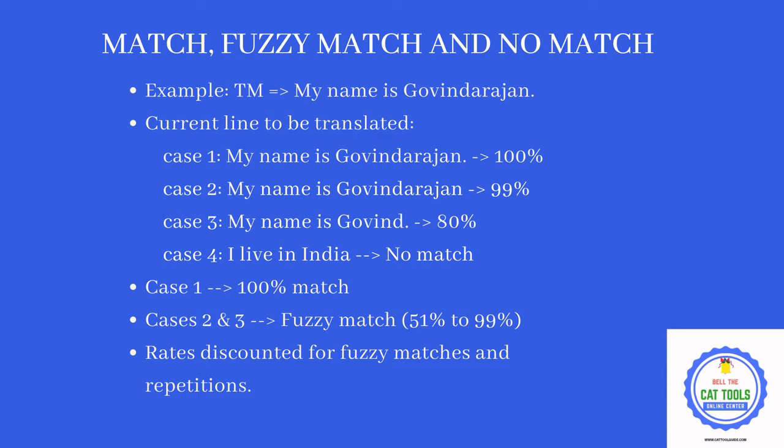In case three, 'My name is Govindarajan' with some variation may be approximately an 80% match. In case four, if I translate 'I live in India,' which is not matching 'My name is Govindarajan' in the translation memory in any manner, it will be a no match. So case one is a 100% match, cases two and three are fuzzy matches, and case four is a no match.